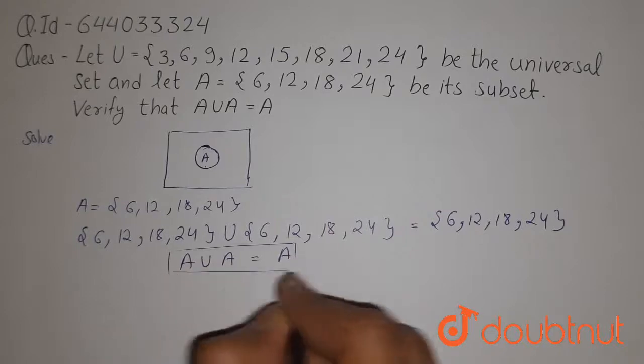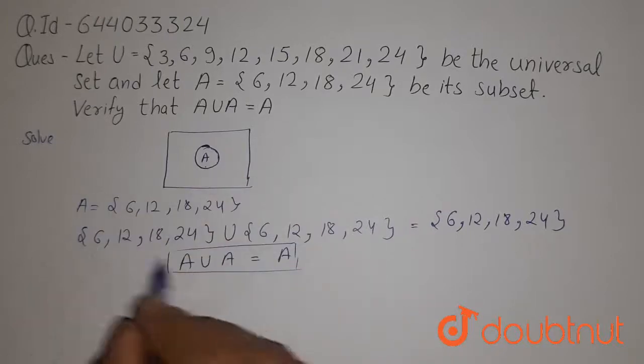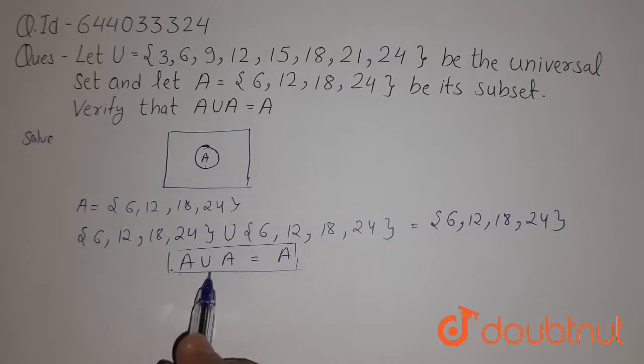Hence we can say that A union A is always equals to A. It is proved by a Venn diagram and it is also we can see in numerical terms A union A is also equal to A. Thank you.